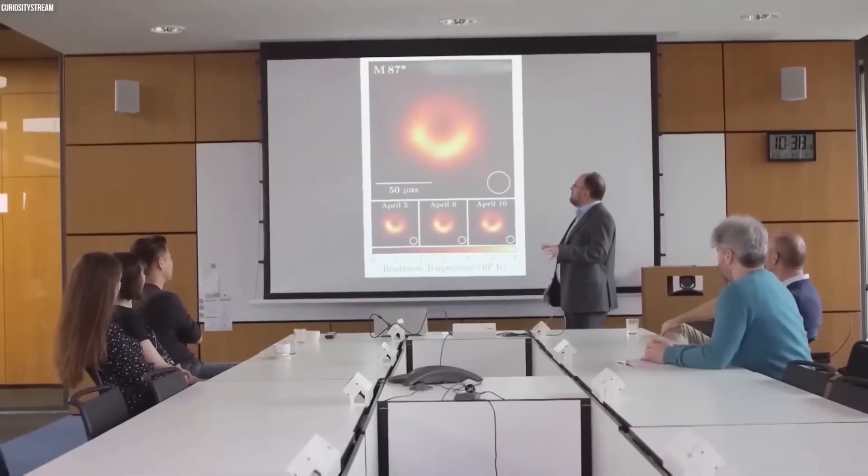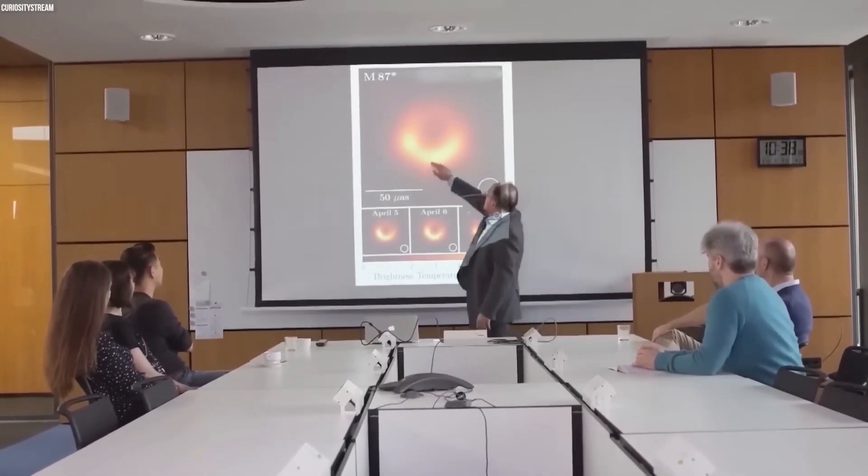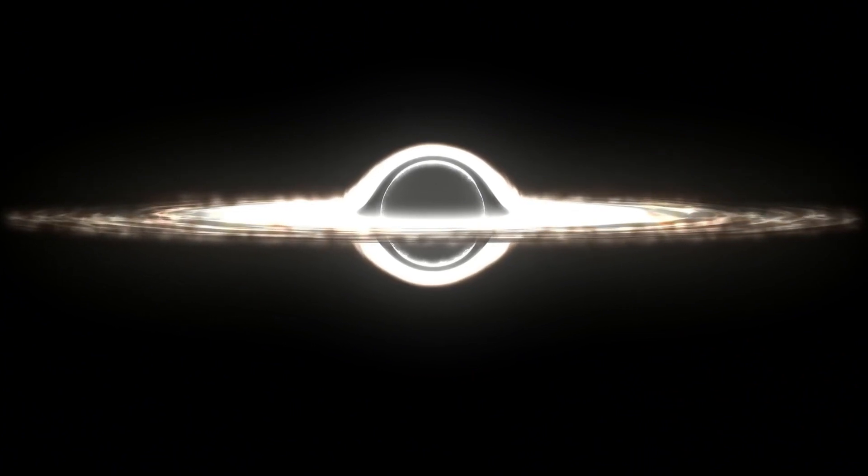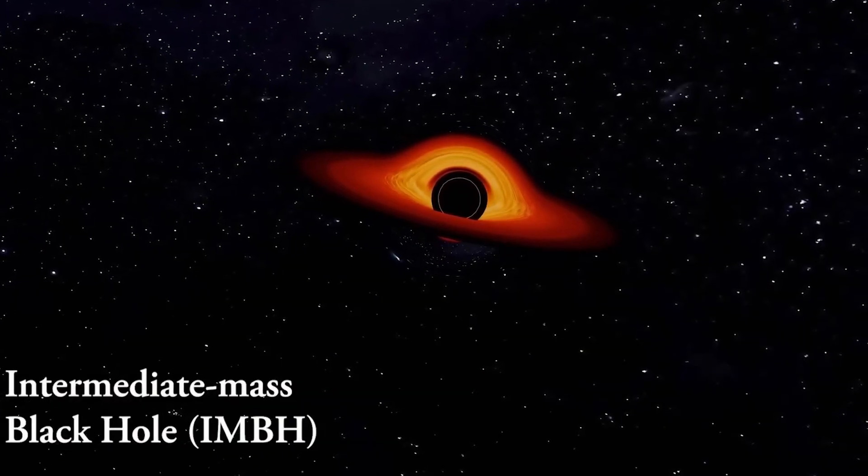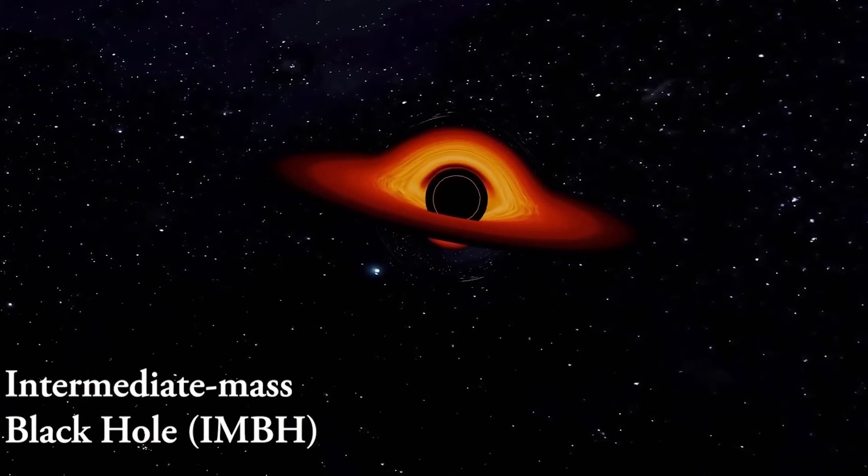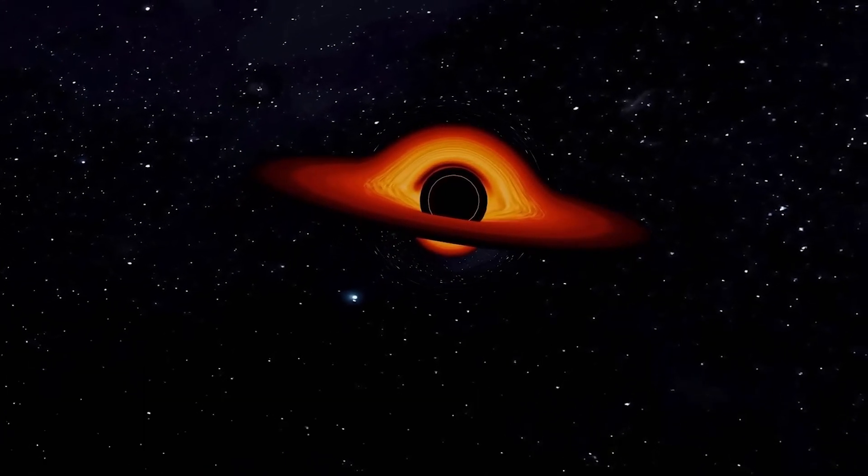Astronomers have found evidence of a rare intermediate black hole in our cosmic neighborhood. It is an intermediate mass black hole located about 6,000 light years away in the Messier 4 star cluster.